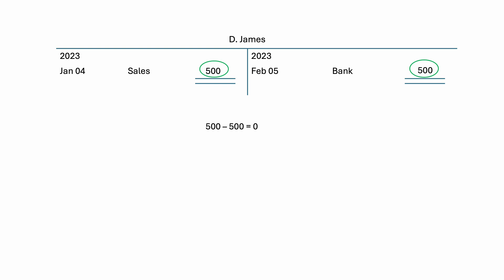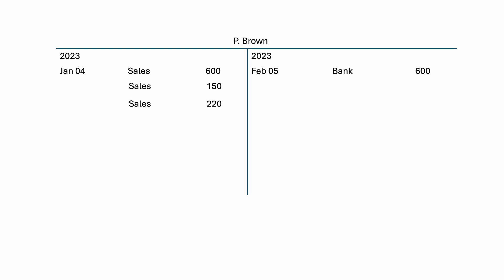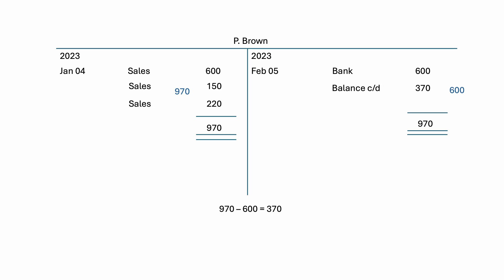Closing off this account is done by simply underlining both sides. Here is another account, P. Brown. It is a trade receivable account. The total on the debit side is 970, and the total on the credit side is 600. The bigger number, which is 970, becomes the total on both sides. To find what the balance is, 600 is subtracted from 970 to give 370. Therefore, the balance is 370. This balance goes to the side with the smaller balance, as balance carried down. This balance is brought forward to the next period as balance brought down.